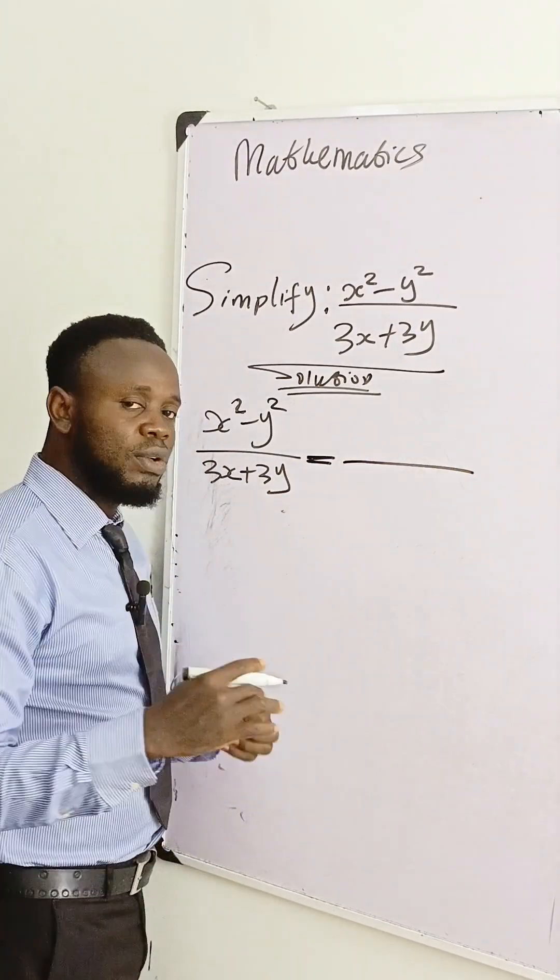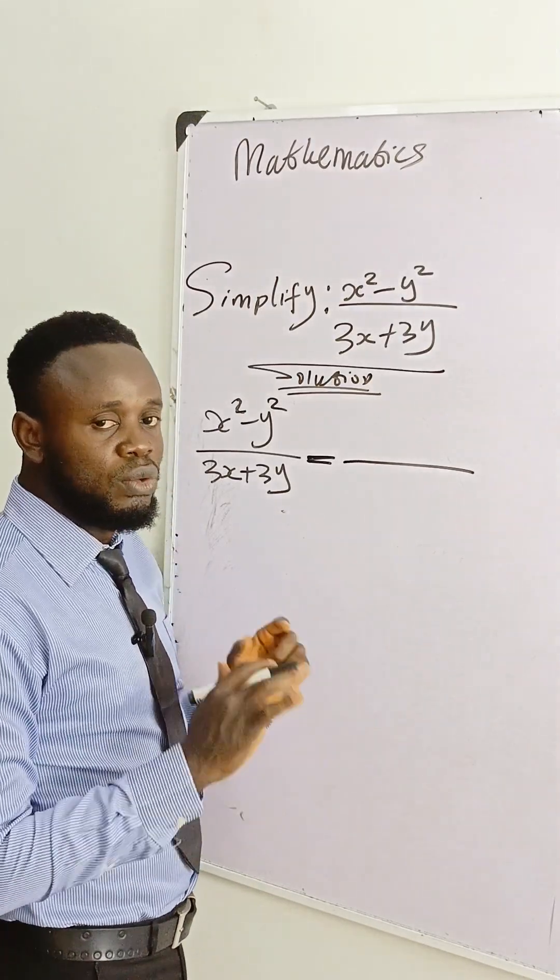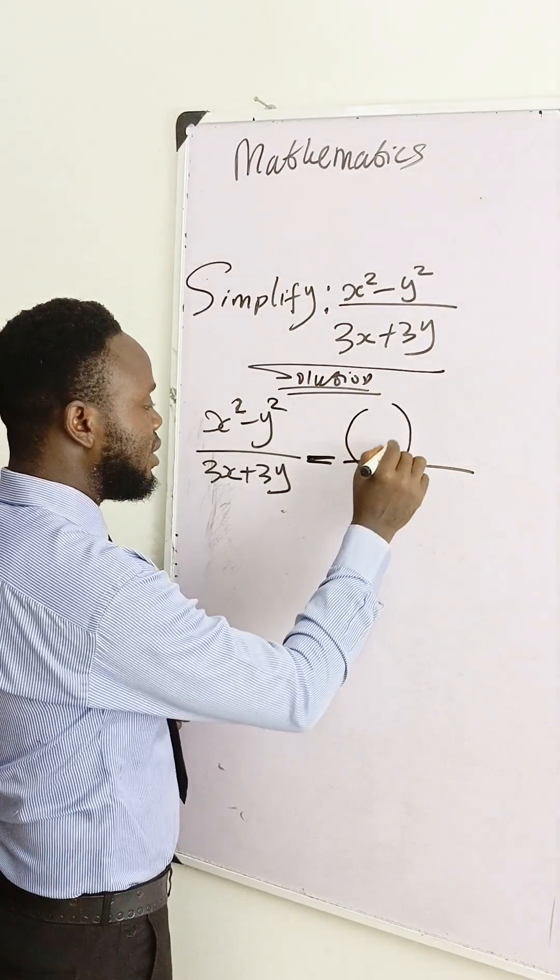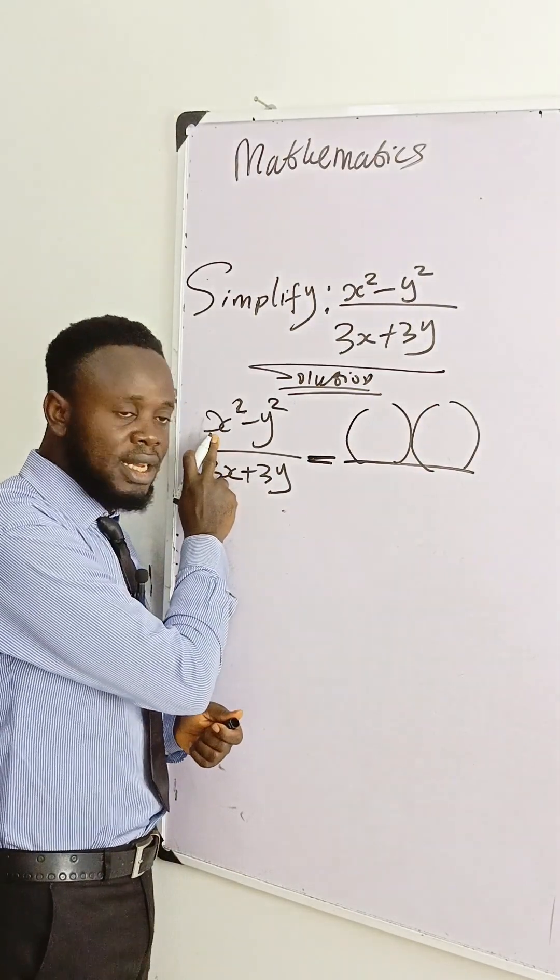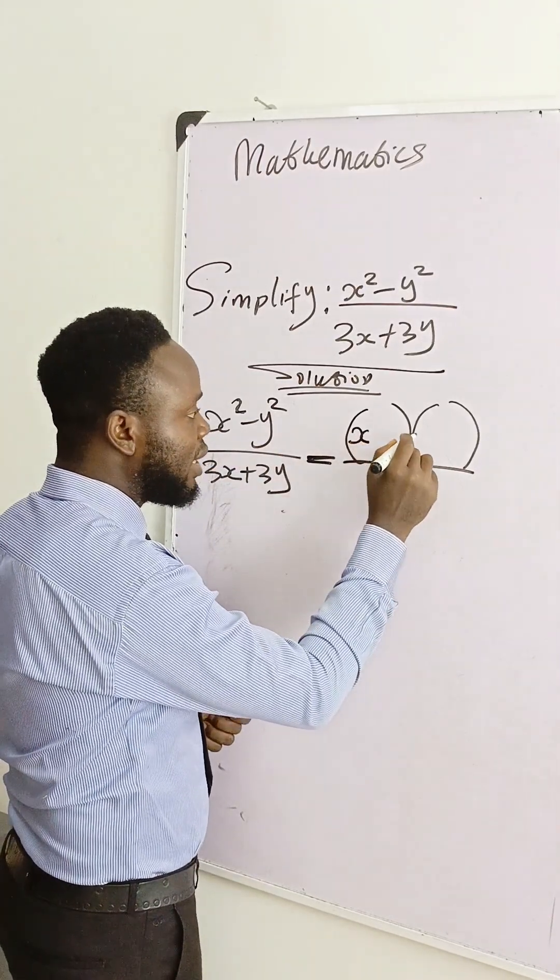So in difference of two squares, whenever you are solving a mathematical problem and you see a difference of two squares, what you do is open two brackets. That's the rule. Open two brackets. The first thing here, which is the first letter x, should be at the first side of the brackets.